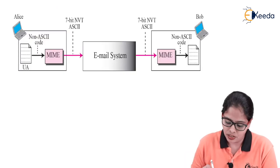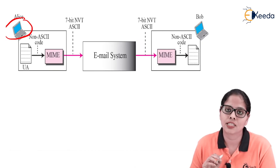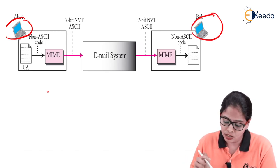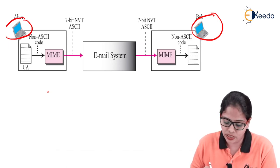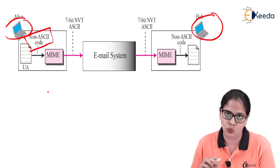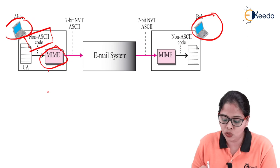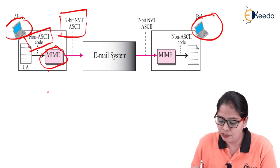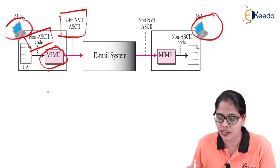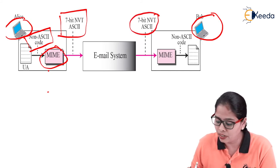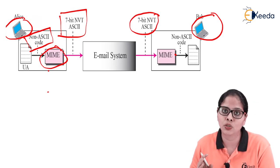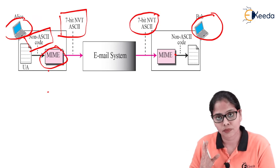The sender sends audio, which is non-ASCII. MIME converts it into 7-bit NVT ASCII code, it is forwarded through email and over the internet, and at the receiver end MIME converts this 7-bit NVT ASCII back to non-ASCII. Then it is forwarded to the receiver. With the help of MIME, it is possible to send audio and video through email.